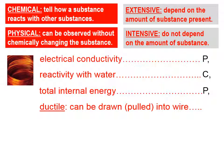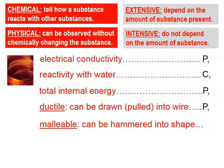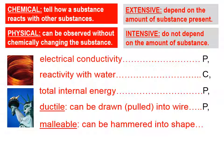The term ductile means that something can be drawn or pulled into wire — this is typical of metals. Ductility is also a physical property, because if you draw or pull metal into a long wire, it's still the same metal. It hasn't changed its identity simply by being pulled into wire. Malleable means something similar to ductile, except malleable specifically refers to things like metals that can be hammered into shape, such as the copper sheets that cover the Statue of Liberty, which were essentially hammered into particular shapes.